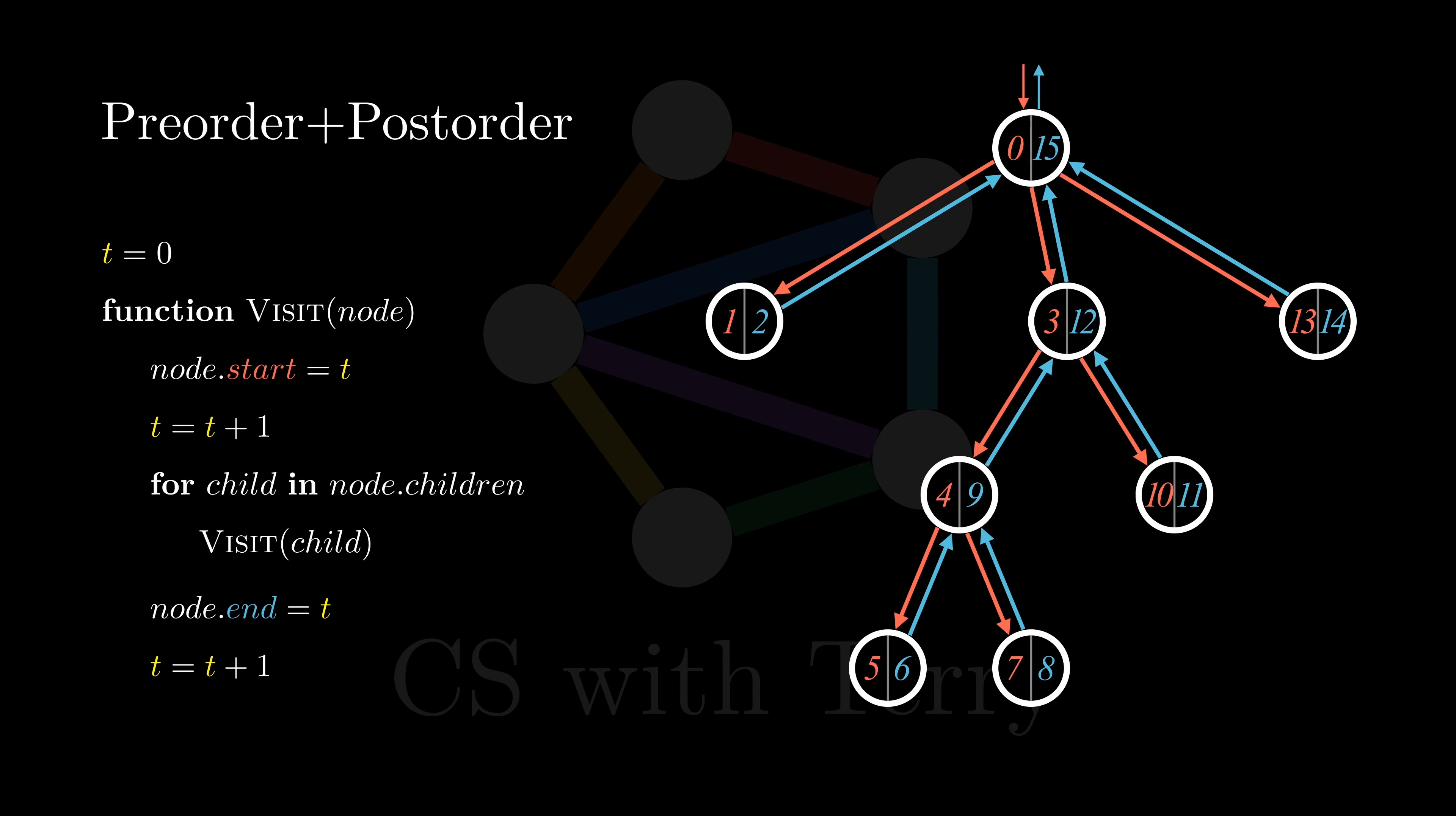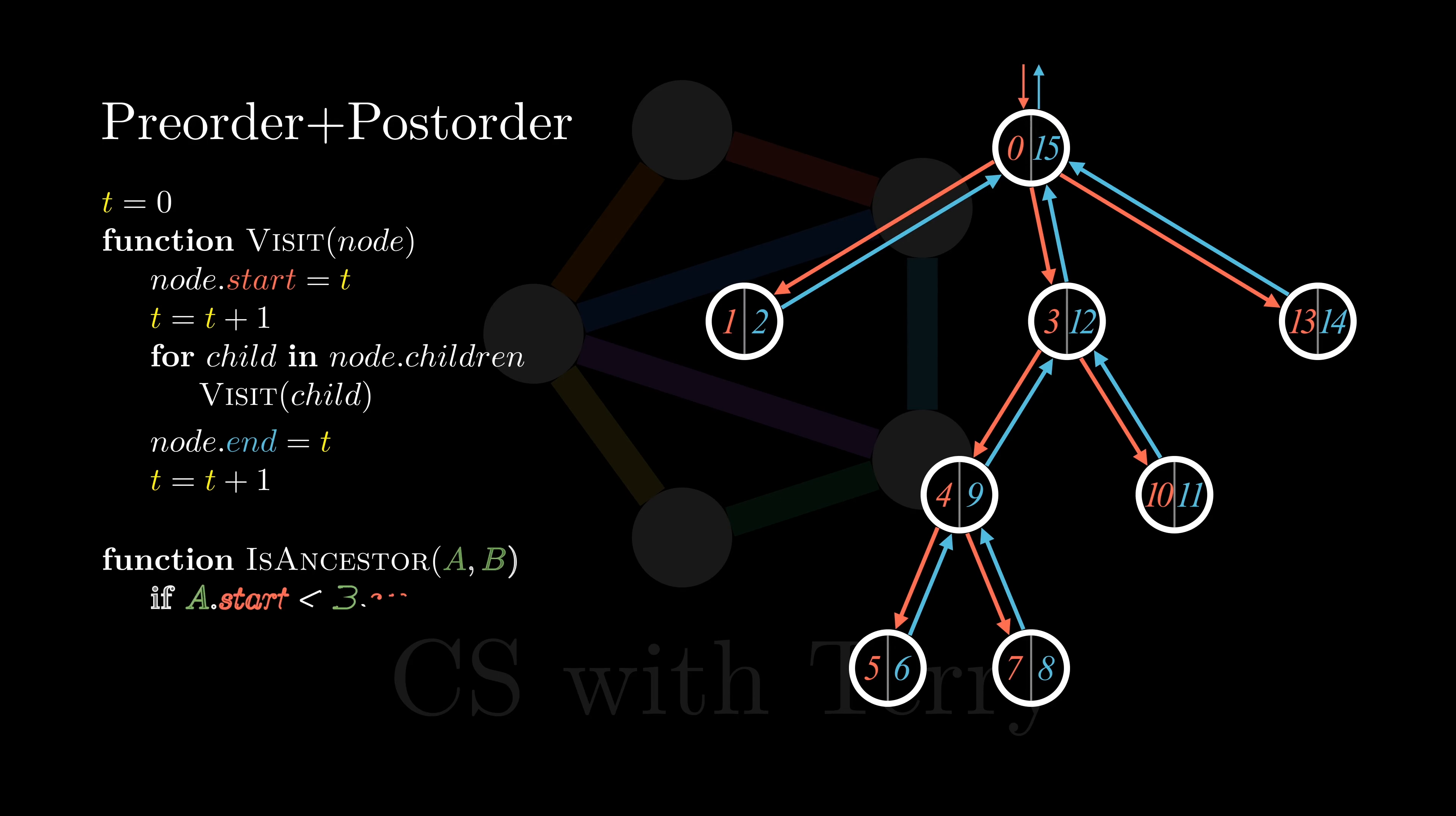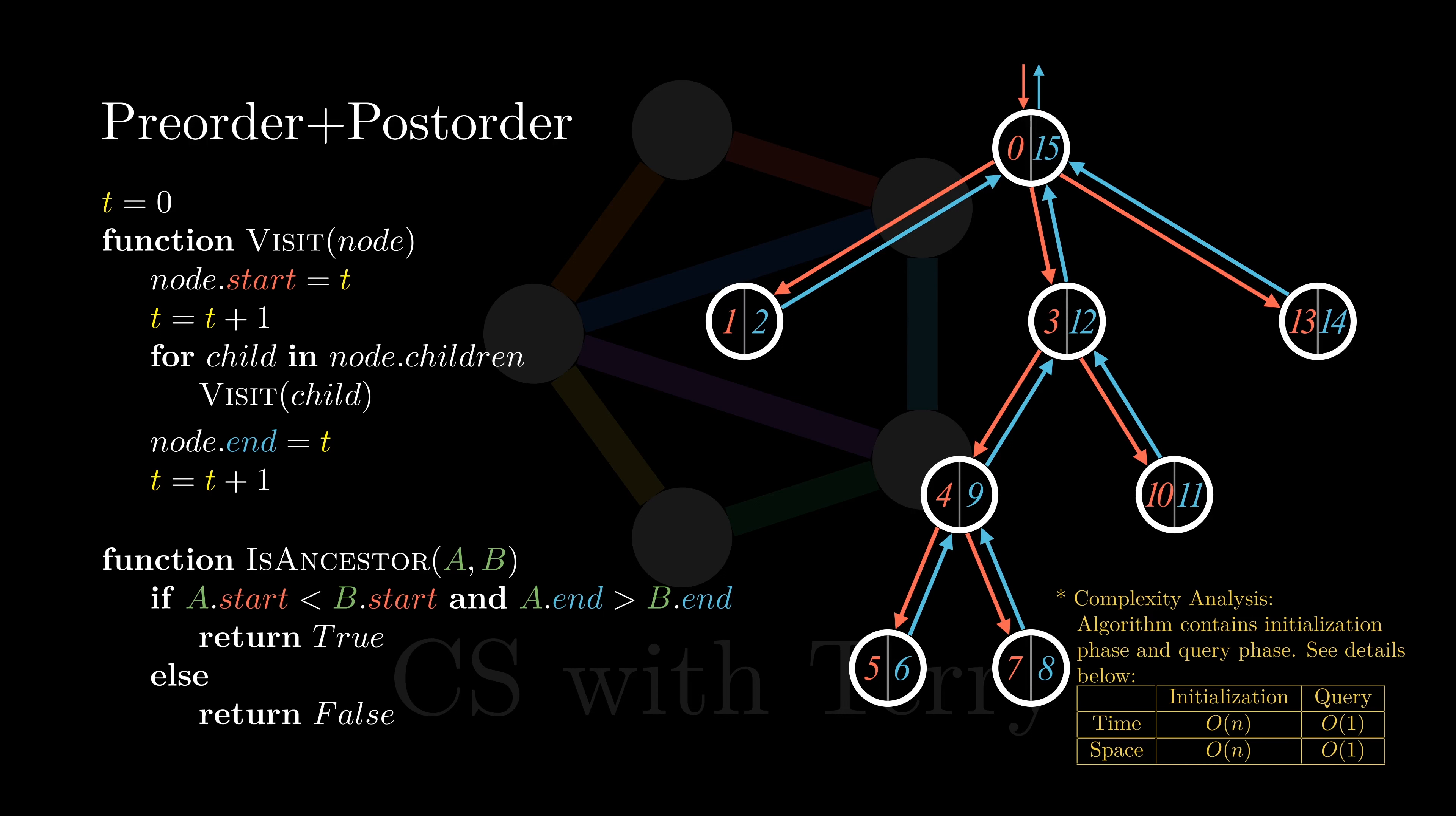Now that we simultaneously record the arrival and departure time for each node, our problem is also solved. Let's take a look at the is ancestor function, which is used to determine whether A is an ancestor of B. We can see that if A is an ancestor of B, the duration of A's visit must span that of B's. Otherwise, A is not an ancestor of B. This is a very efficient algorithm, especially if we need to call the function multiple times.